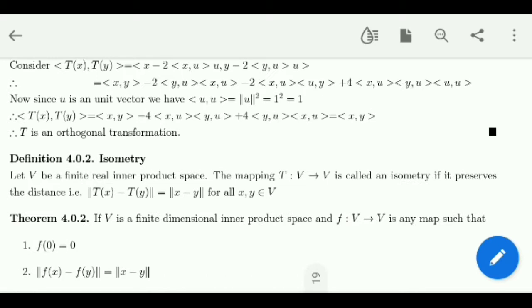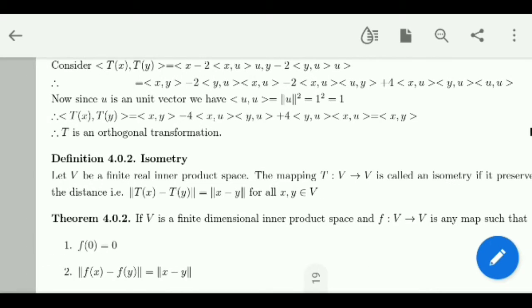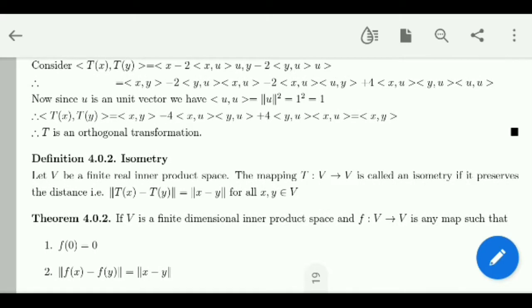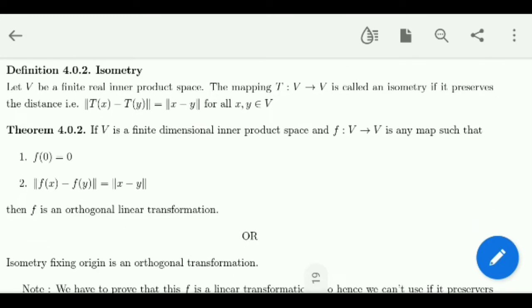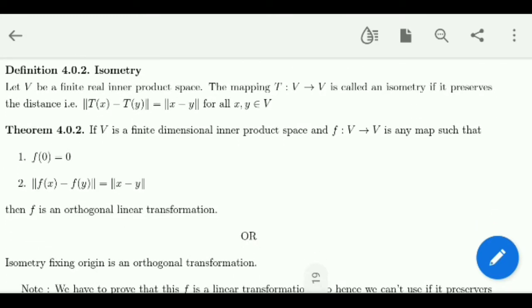Now we are going to discuss what is known as an isometry. An isometry is nothing but a map which preserves distance between two points. Mathematically, I have V, a finite dimensional real inner product space, a linear operator T from V to V. I will say it is an isometry if it preserves distance. The distance between two points is the norm of the difference between them, so distance between x and y is equal to norm of x minus y.